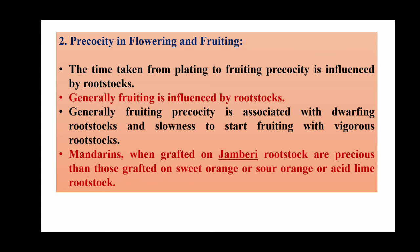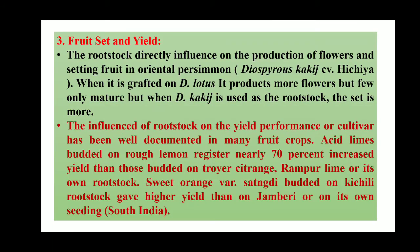Precocity — in the flowering and fruiting, the time taken from planting to fruiting — precocity is influenced by the rootstock. Generally, fruiting precocity is associated with dwarfing rootstock, and slowness to start fruiting is associated with vigorous rootstock. In mandarin, when grafted on the Jambheri rootstock, they are more precocious than those grafted on sweet orange, sour orange, or acid lime rootstock.